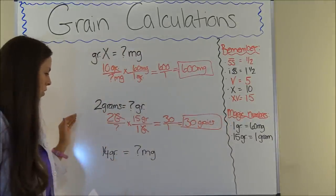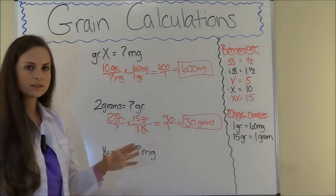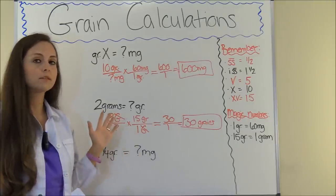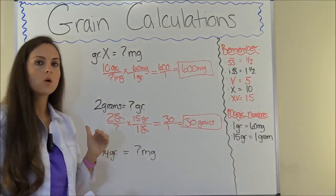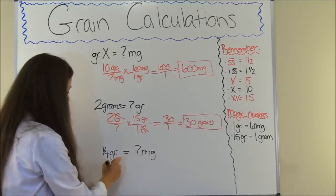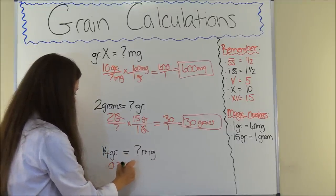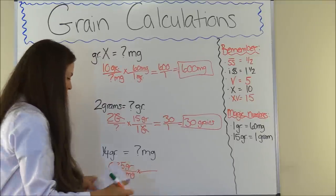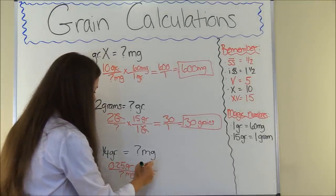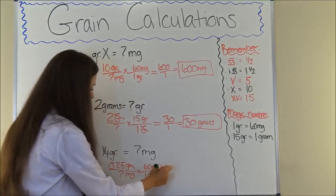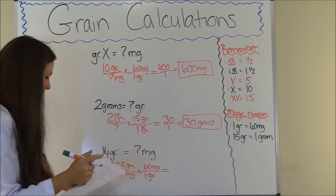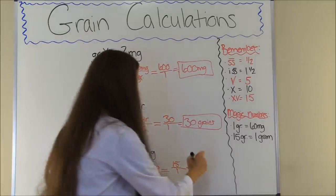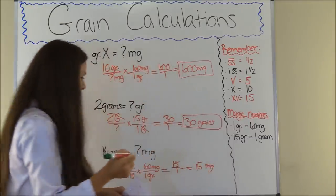Next problem: one-fourth grain equals how many milligrams? Fractions can trip people up, but just convert to a decimal — it's easier. One fourth is 0.25. So 0.25 grains equals how many milligrams? We know one grain equals 60 milligrams. Grains cancels out. So 0.25 times 60 equals 15, divided by 1 is 15. One-fourth grain equals 15 milligrams.